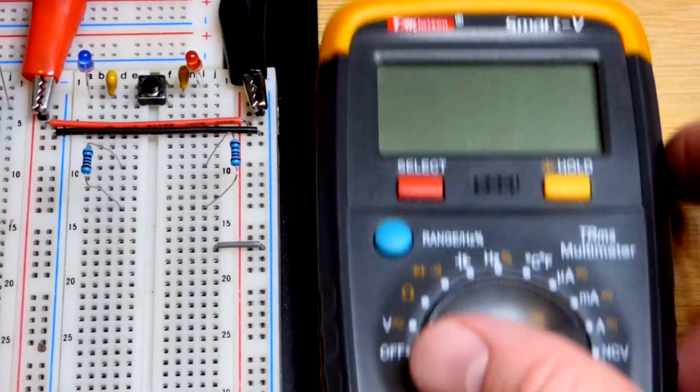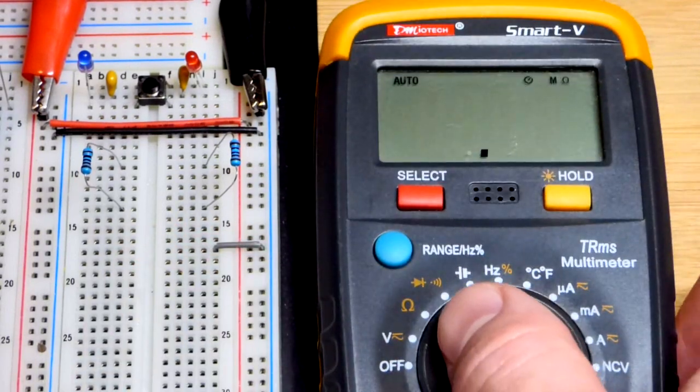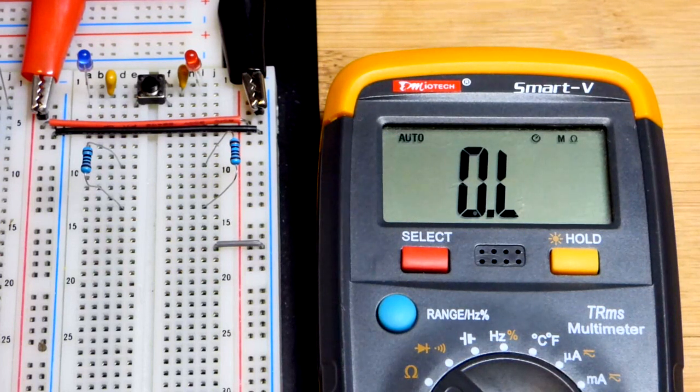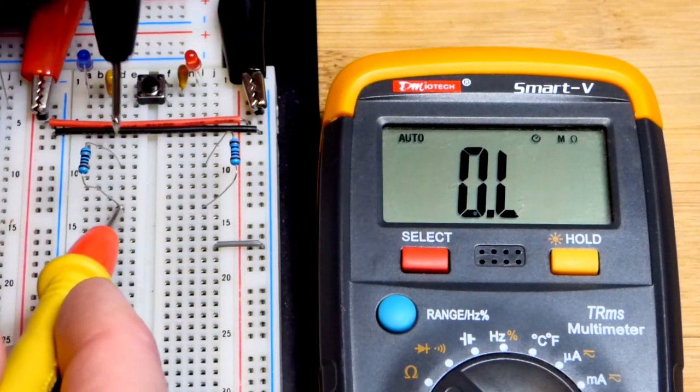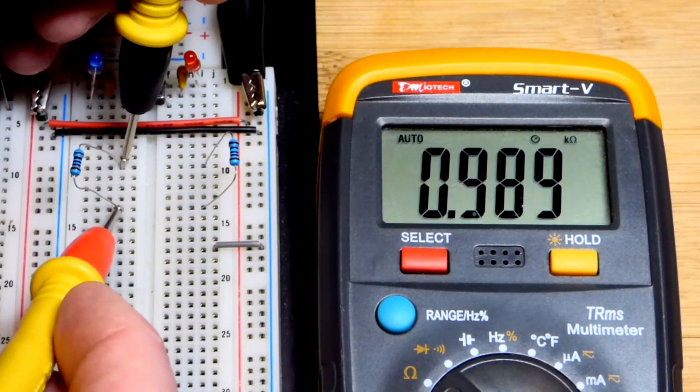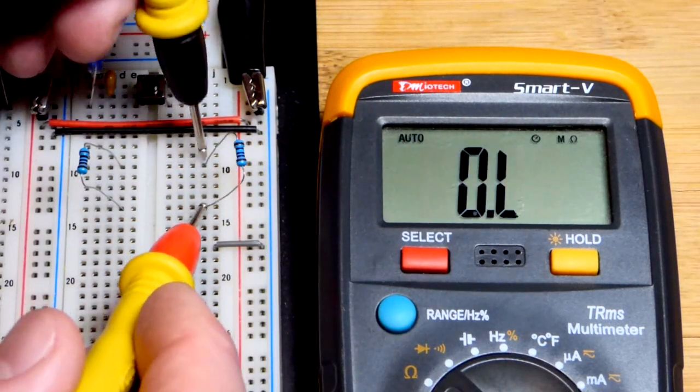Of course you can take multimeter measurements on the breadboard. Pretty easy. This is an auto range meter. All I have to do is set it to resistance and go across the resistor. Polarity doesn't matter. Current goes through the resistor the same either way. There you can see that's just shy of 1 kiloohm, 1000 ohms.